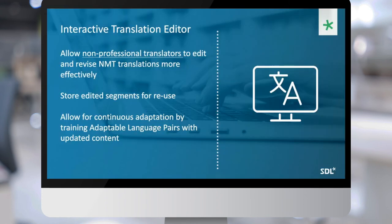Another big feature introduced specifically for MT Edge is what we call the interactive translation editor. This feature is focused specifically on enabling non-professional translators to edit and revise machine translation output more effectively within the MT interface. The stored edited segments are saved for reuse, and those edited segments stored in translation memory allow customers to continuously adapt the language pair model using our adaptable language pair feature.